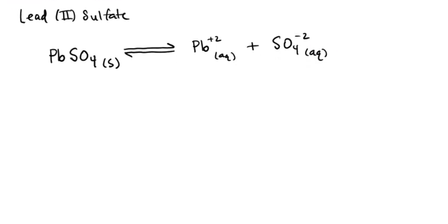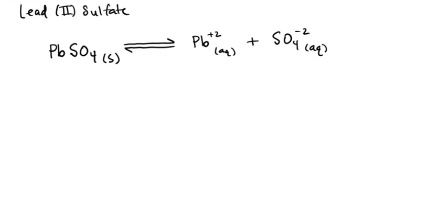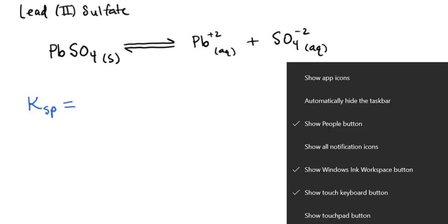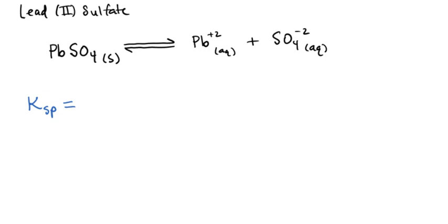Now the equilibrium expression for this, which would be the law of mass action, gets a special designation. We give it the designation Ksp, the solubility product constant for the equilibrium process. It's written the same way as any other law of mass action, always products raised to their coefficients over reactants raised to their coefficients.